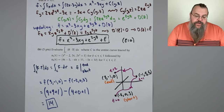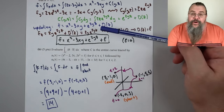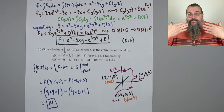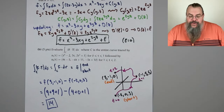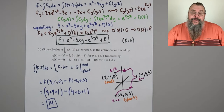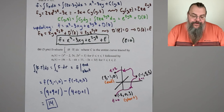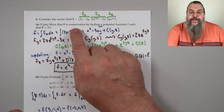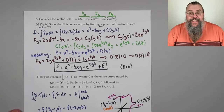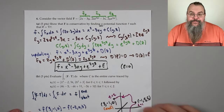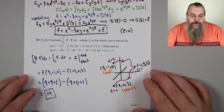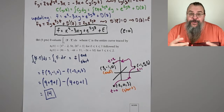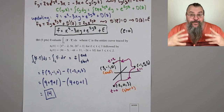Part b really uses part a. The key insight is that the fundamental theorem of calculus for line integrals says: if F is conservative — meaning it has a potential function — then the line integral depends only on the endpoints, not the path.